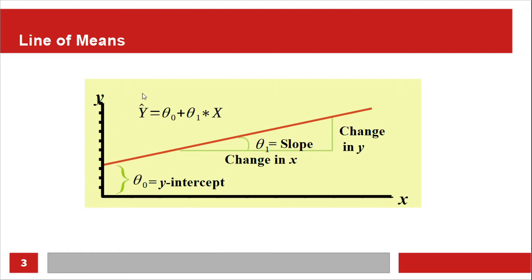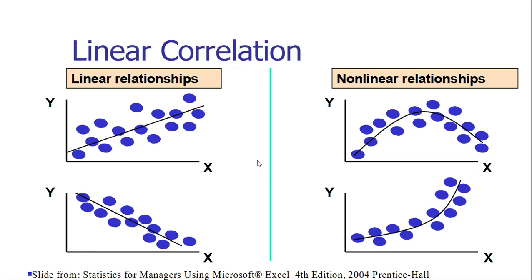The goal of linear regression is to draw a line that fits your data. In our case y_hat is the predicted salary. Theta zero is the y-intercept — the starting point on the y-axis. Theta one multiplied by x is the slope, which is the change in y divided by the change in x.